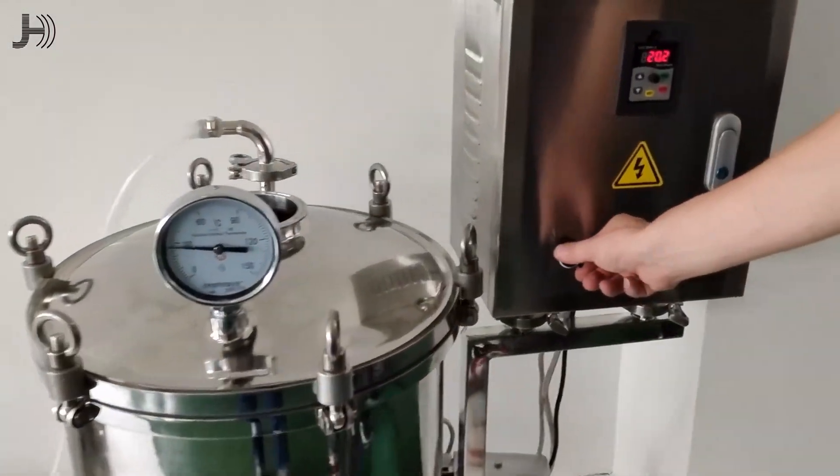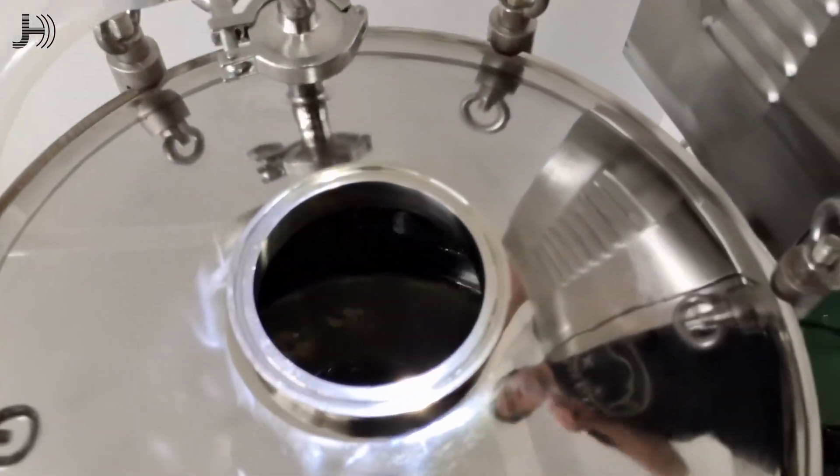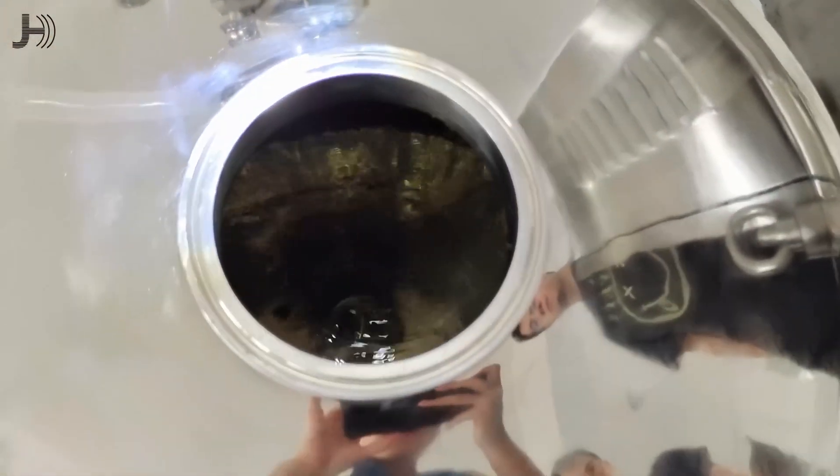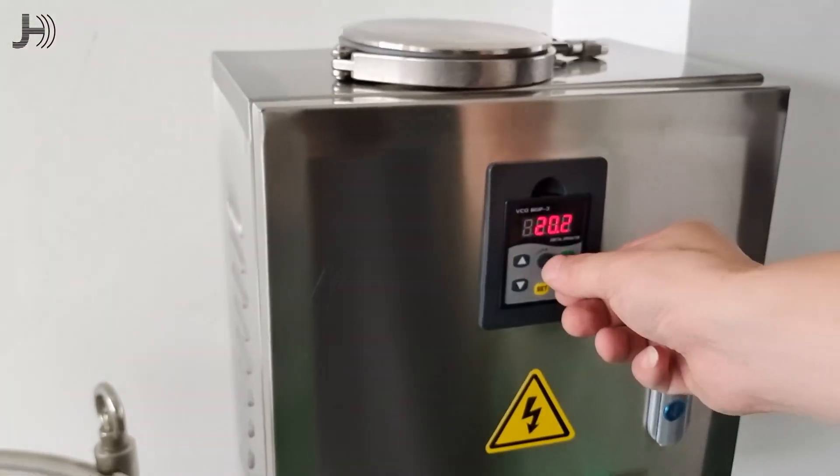First, let's turn on the magnetic mixer. You can see it works and the speed can be set here.